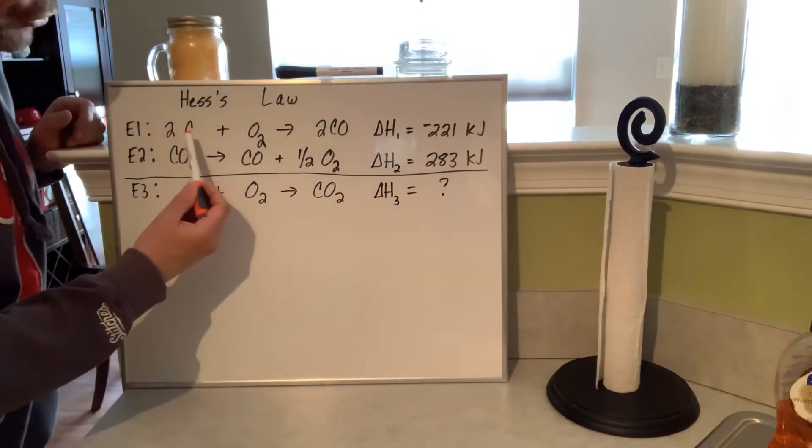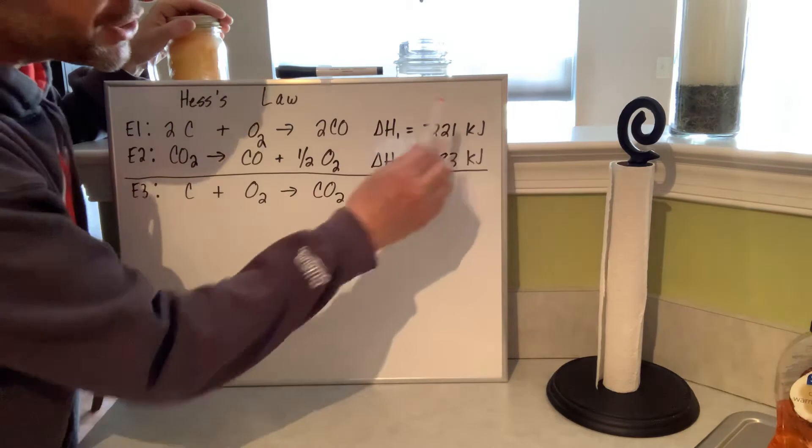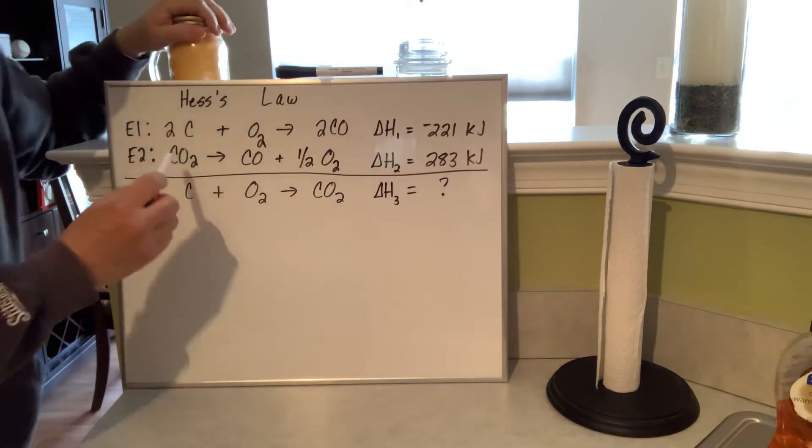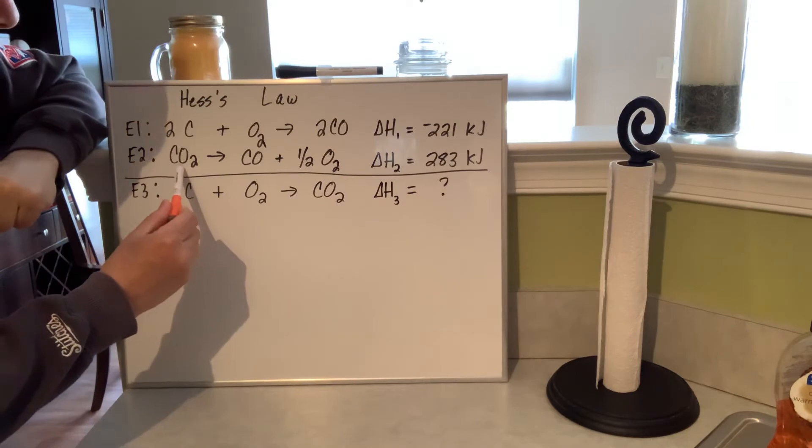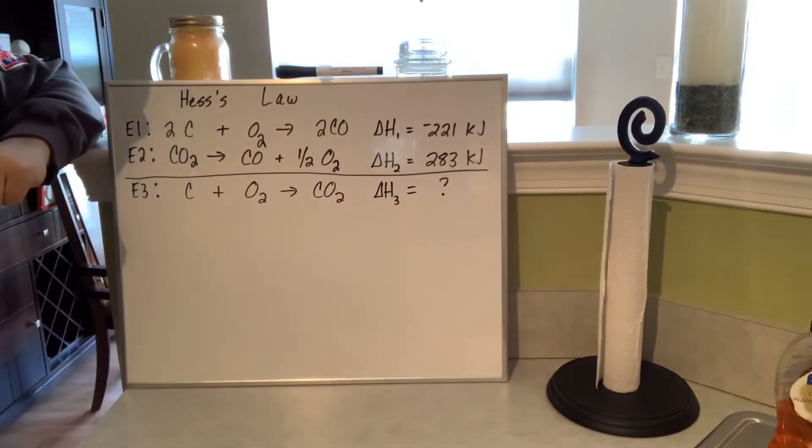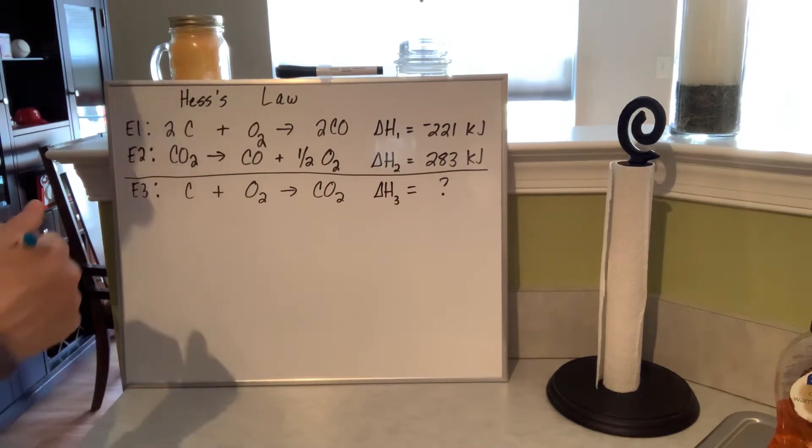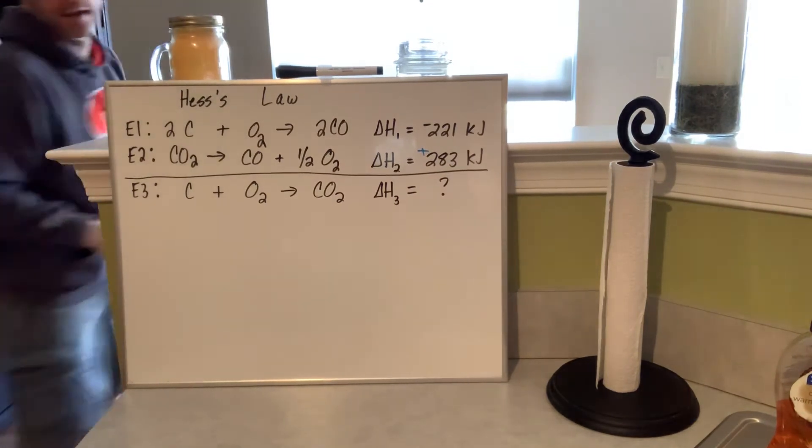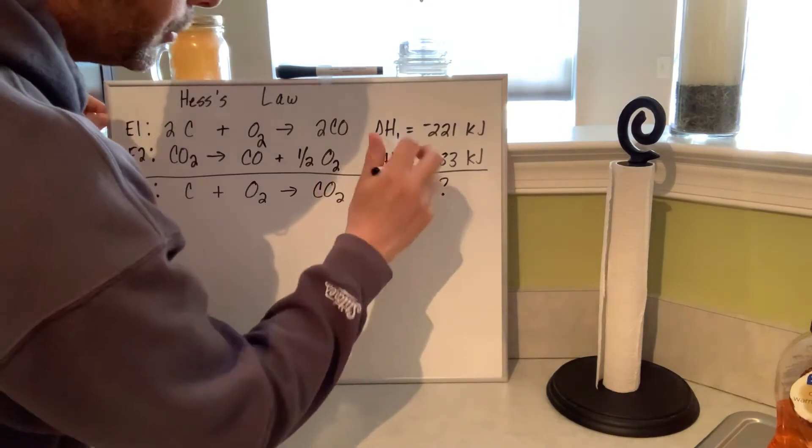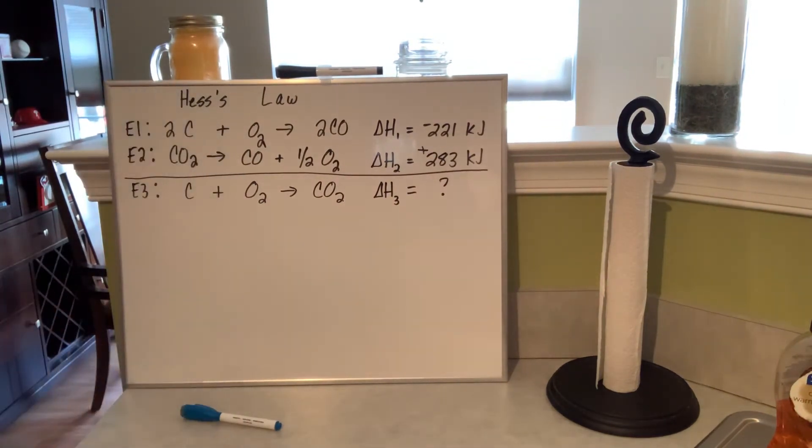Now I'm going to give you some strategies, but just like balancing equations, the strategies do not always work. I like to do it like this. So what this means is I have two moles of carbon burning in oxygen will produce two moles of carbon monoxide and the delta H value is negative 221 kilojoules. Well, equation two, by the way, the E1 means equation one, E2 means equation two. So equation two, you have carbon dioxide breaking down into carbon monoxide and one half of a mole of oxygen that would require 283 kilojoules. I should probably put like a positive sign here, maybe plus 283. So we got positive 283 kilojoules for that to happen.